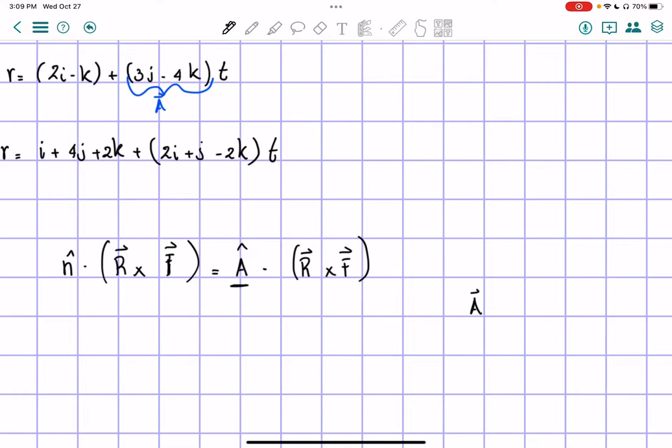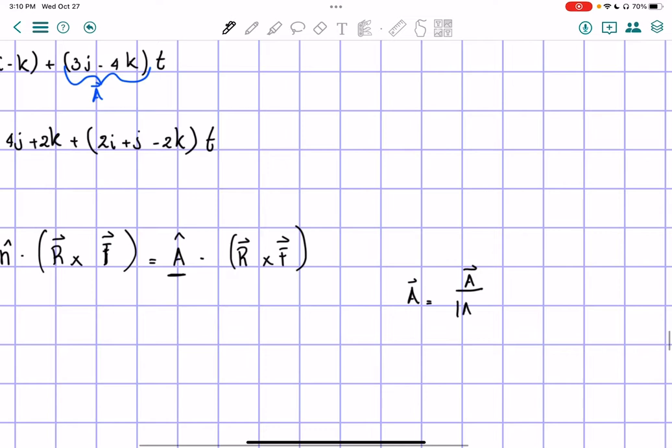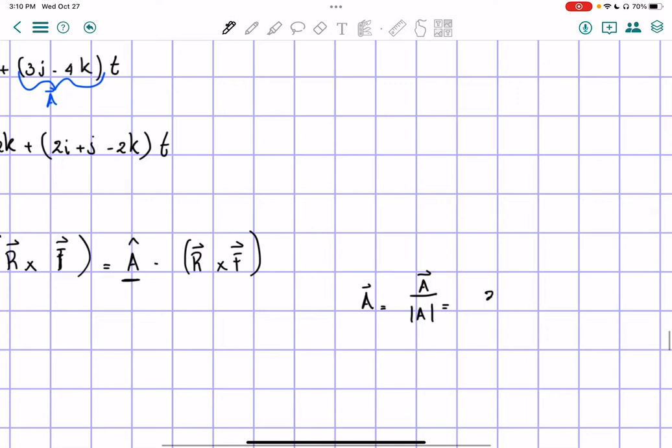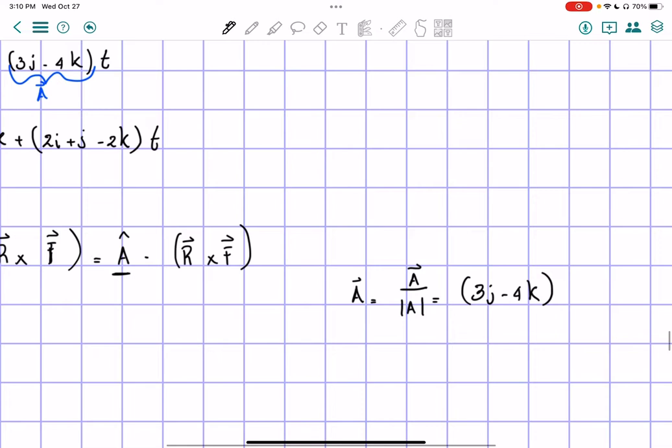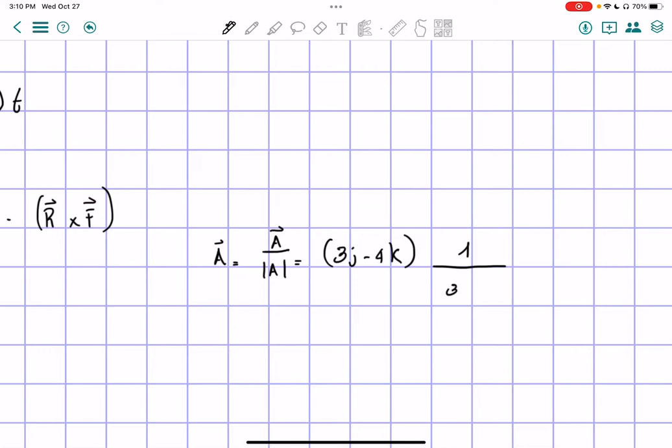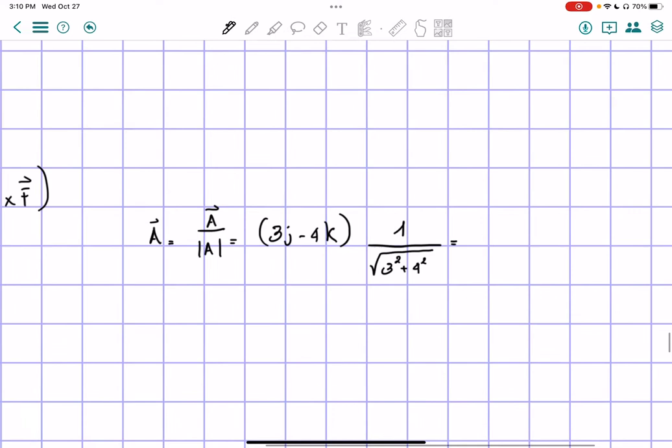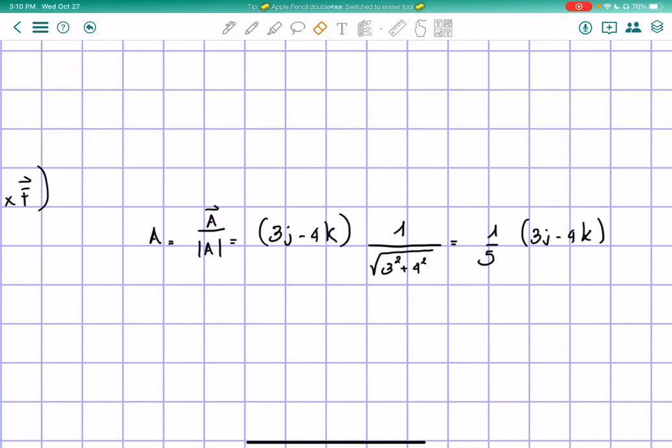So if we need to find A hat, we can simply find it to be vector A over magnitude of A. So vector A is 3j minus 4k, so 3j minus 4k divided by the magnitude of A, which is going to be square root of 3 squared plus 4 squared. So we get 9 plus 16 is 25, square root of 25 is 5, so 1 over 5 times 3j minus 4k. So that is the unit vector A.